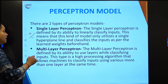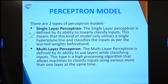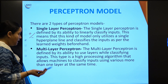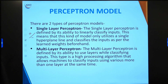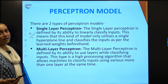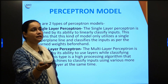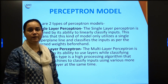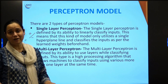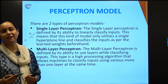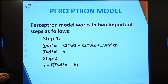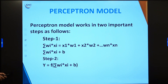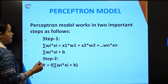When you have a nonlinear model, you have to go for a multilayer perceptron model. It is defined by its ability to use multiple layers while classifying the input — a high-processing algorithm that allows machines to classify input using more than one layer at a time. If the problem is linearly separable, a single layer perceptron will work; if it is nonlinear — which happens in most real-time cases — you go for a multilayer perceptron.